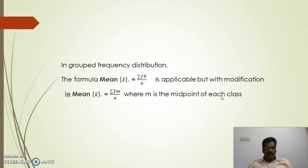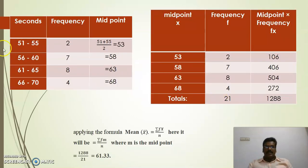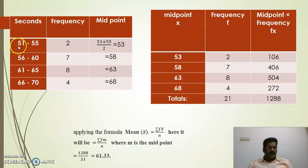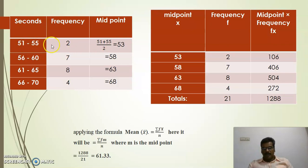Where m is the midpoint of each class. In this grouped frequency table, 51 to 55 has a corresponding frequency of 2. Each individual group is called a class, and here there are 4 classes. For the first class, 51 is the lower boundary and 55 is the upper boundary, with a corresponding frequency of 2. The first step for this mean calculation is to find the midpoint, which is calculated by summing the lower and upper class boundaries and dividing by 2. We perform this calculation for each class to arrive at the midpoints.